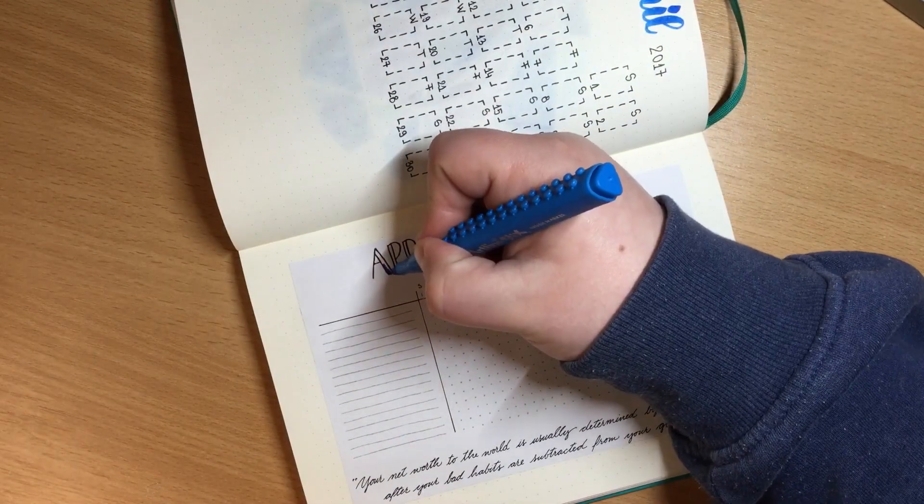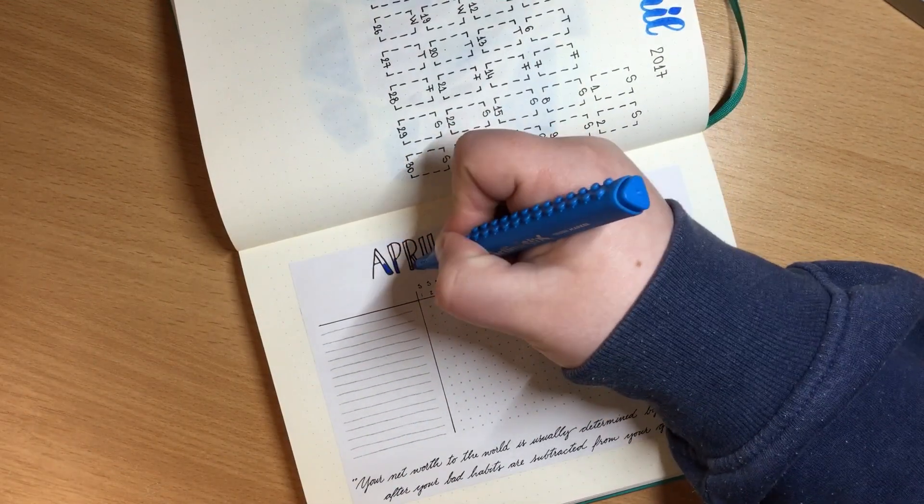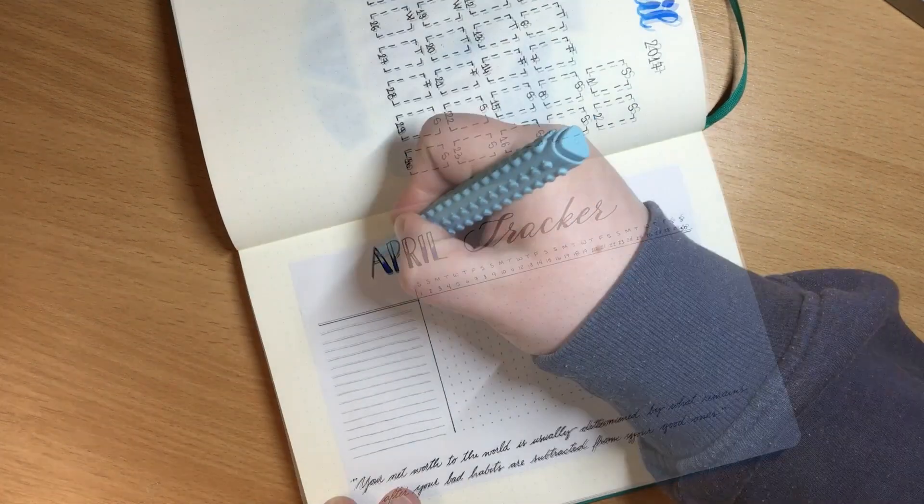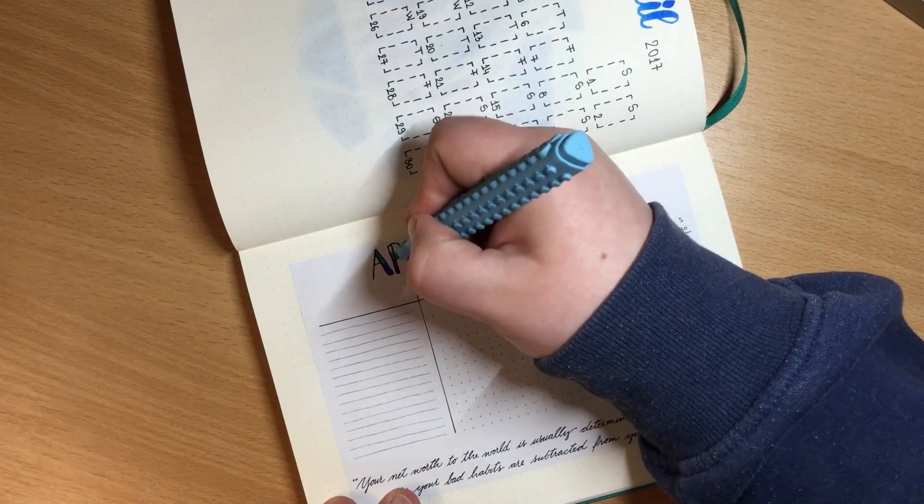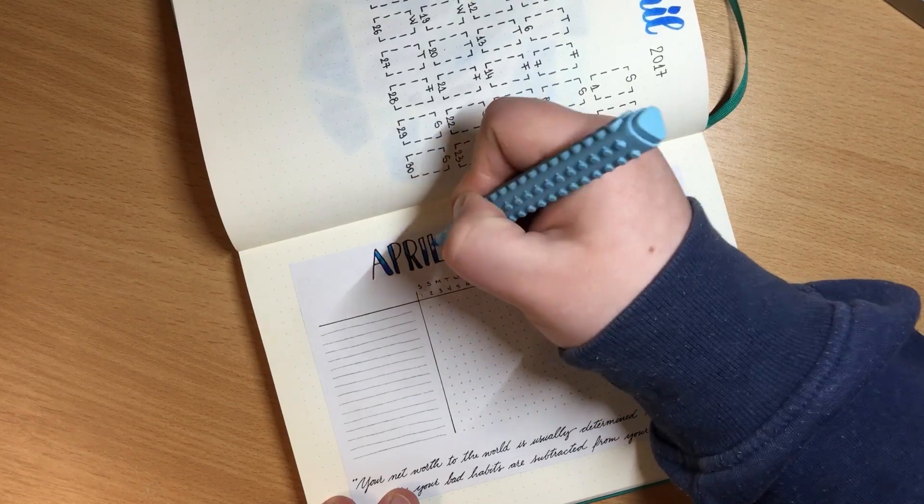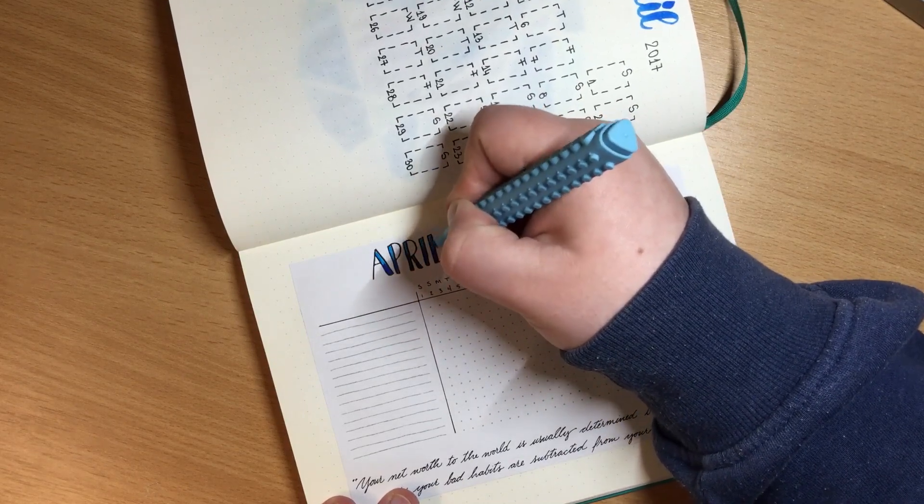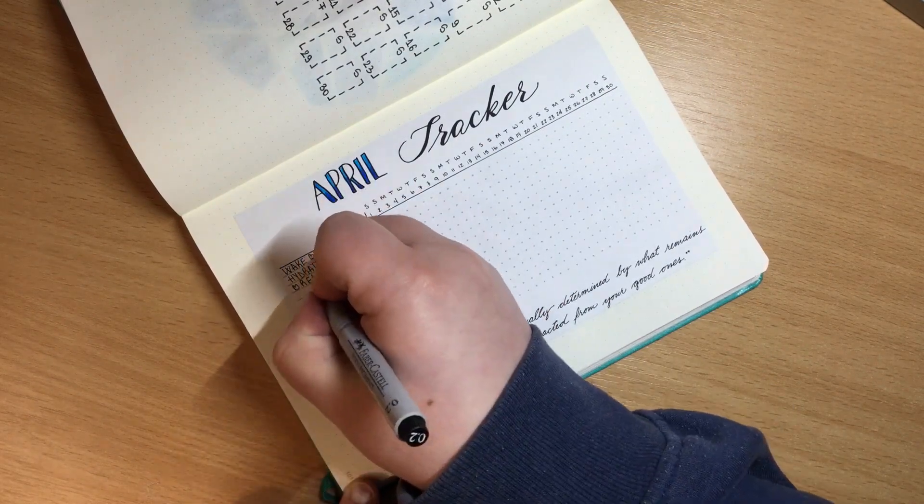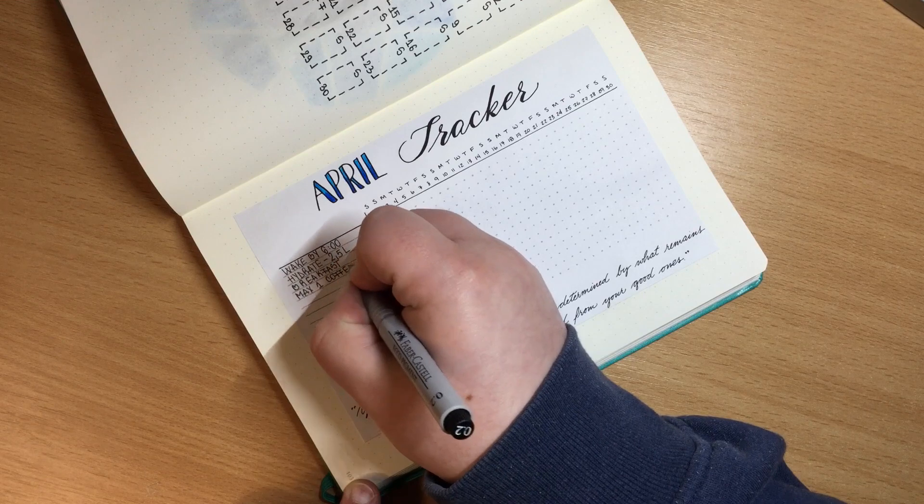I'm using some more Artline sticks brush pen to color in the word April. I'm using the sky blue and the light blue color creating an ombre effect. To write in my habits I use this Faber-Castell eco pigment liner in the 0.2 size.